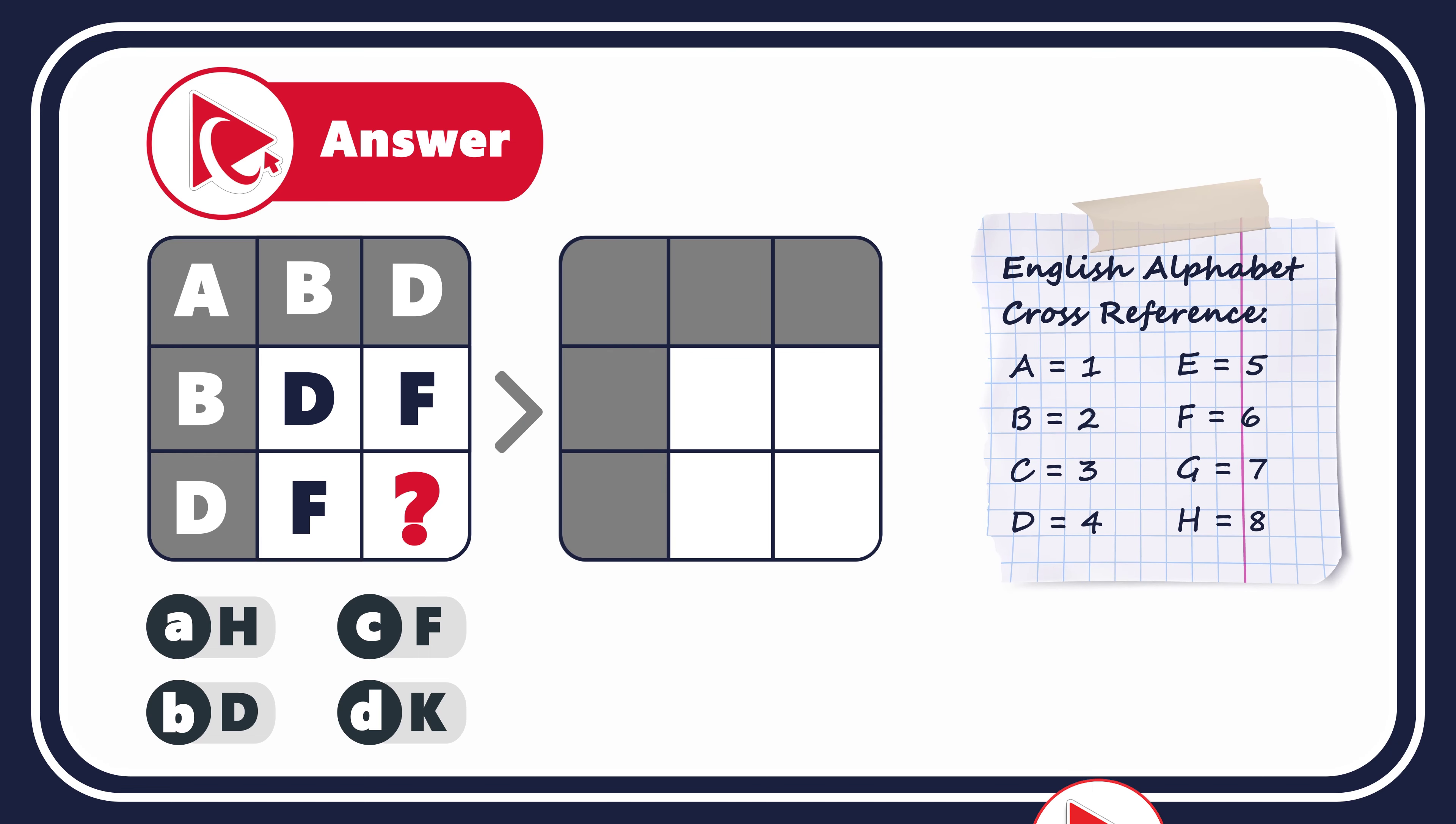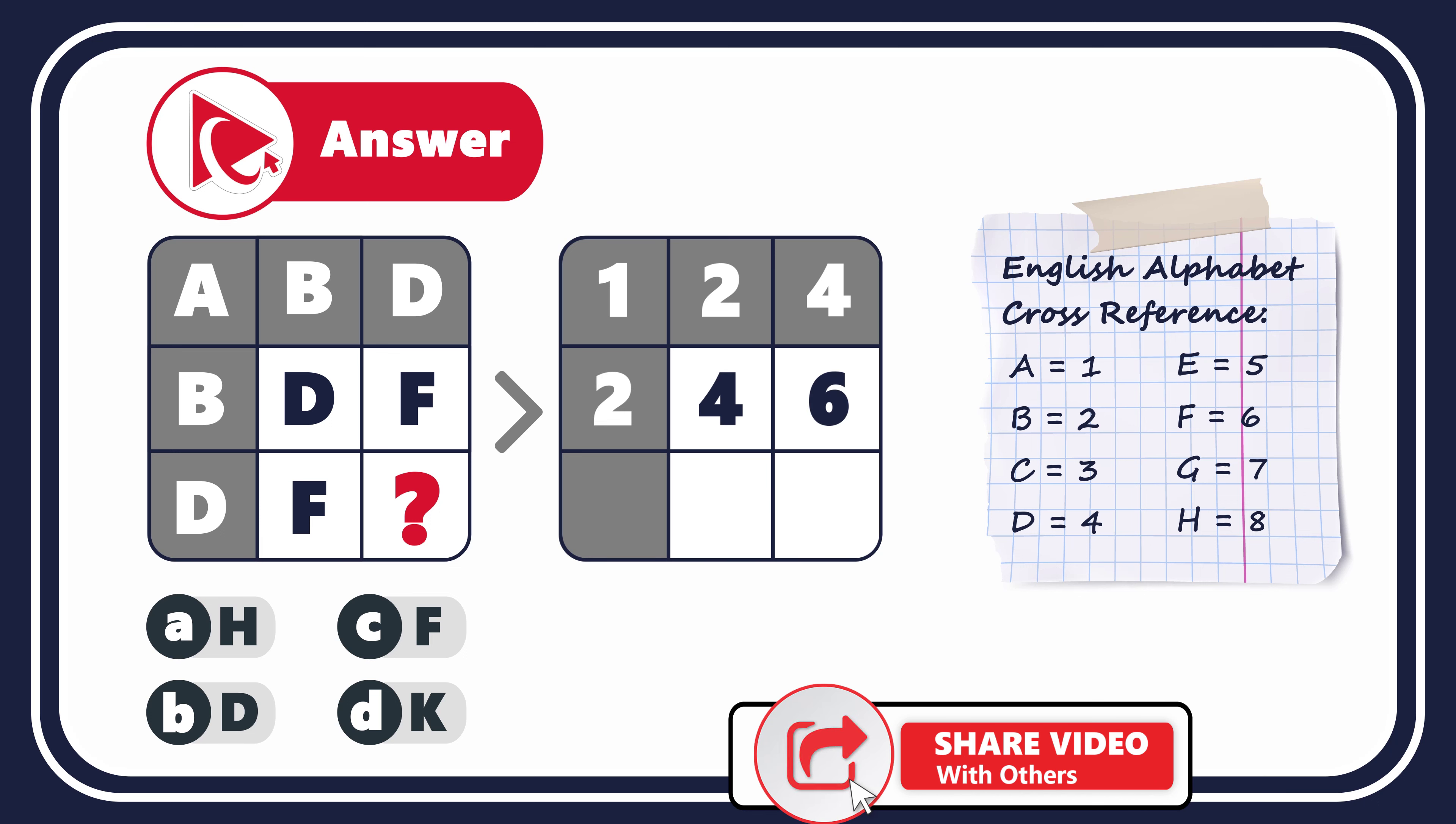So for the first row, the numbers will be 1, 2, and 4. For the second row, the numbers would be 2, 4, and 6. And for the third row, the numbers will be 4 and 6 and that would be the missing number. The next step is to determine what's happening with the numbers and how to calculate the missing number.